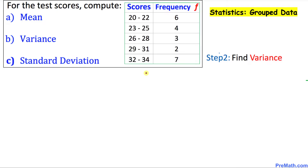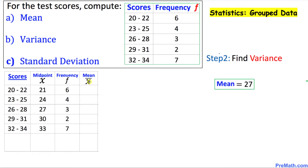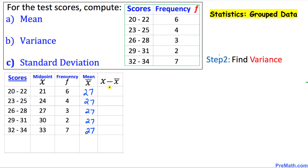Now in step number two, we are going to calculate the variance. We already know the scores, the midpoints, and the frequencies from our previous step. In the fourth column, we write down the mean value x̄, which we found to be 27 — writing 27 across the board for every row.